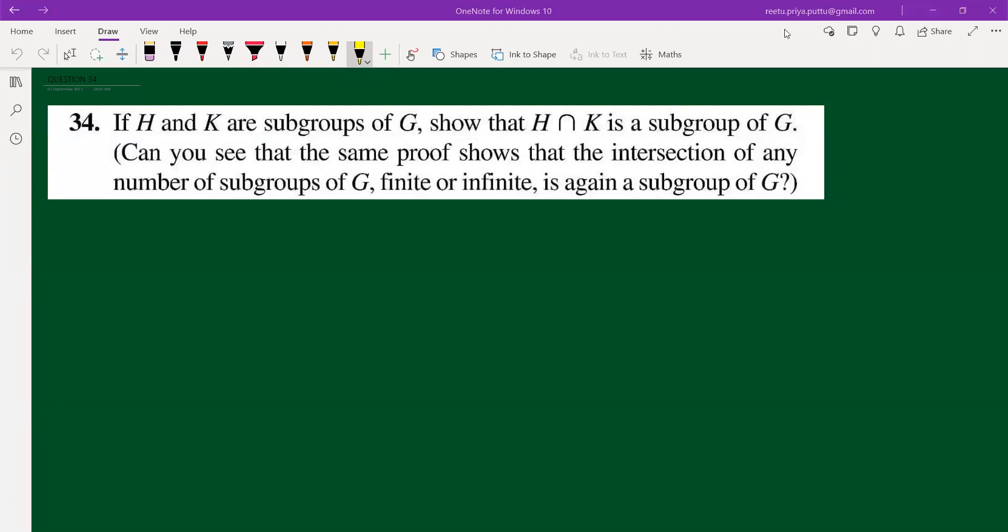This is question number 34 from Joseph Gallian's 9th edition, Chapter 3. The question says: if H and K are subgroups of G, show that H intersection K is a subgroup of G.